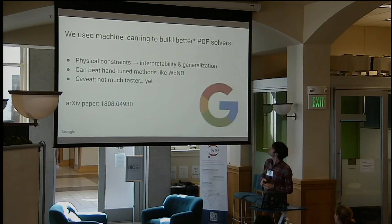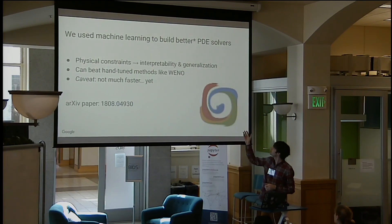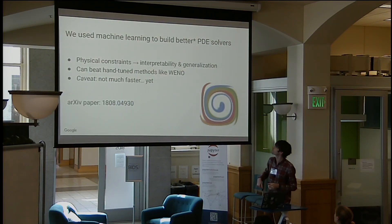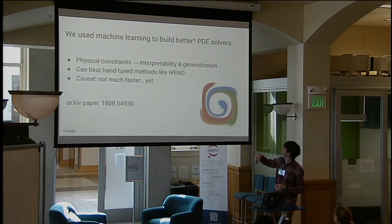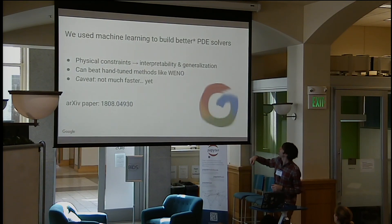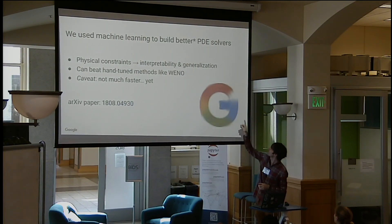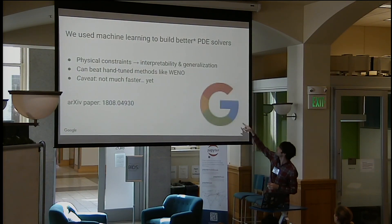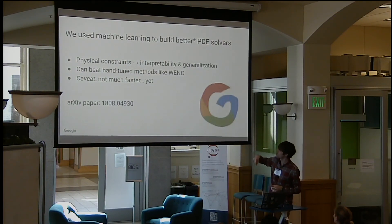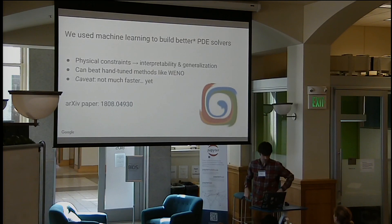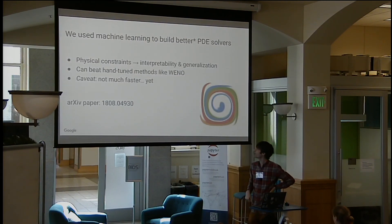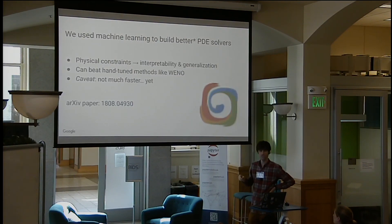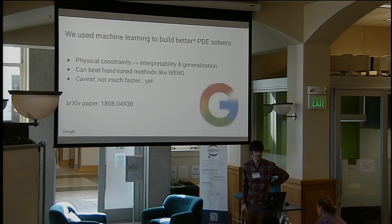And here's one toy example of generalization: we didn't train on the Google logo, but it still swirls pretty well. Thanks for your attention.